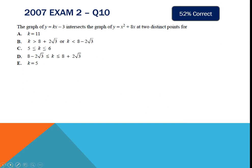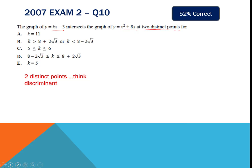Next question — remember you can pause if you want to. The key thing here is we're looking at a graph y equals kx minus 3 intersecting another graph x squared plus 8x at two distinct points. They are intersecting, so the two functions must equal each other. The phrase 'two distinct points' should ring the discriminant in your mind — the discriminant tells you how many distinct solutions or points of intersection there are.